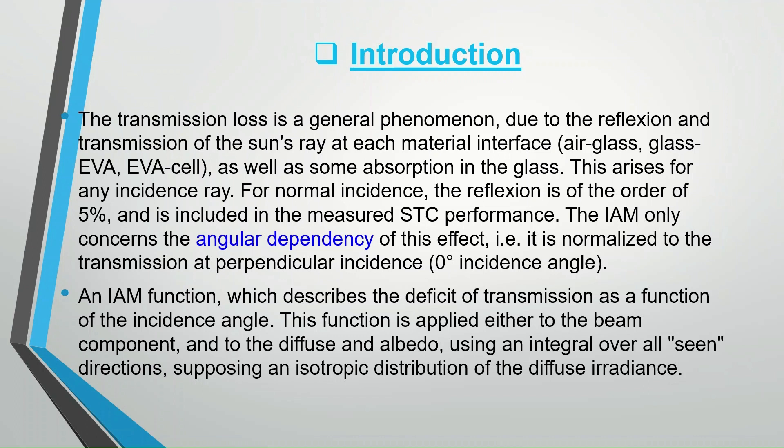For normal incidence, the reflection is of the order of 5% and is included in the measured STC performance. The IAM only concerns the angular dependency of this effect, i.e. it is normalized to the transmission at perpendicular incidence, 0 degrees incidence angle. An IAM function describes the deficit of transmission as a function of the incidence angle. This function is applied either to the beam component and to the diffuse and albedo using an integral over all scene directions, supposing an isotropic distribution of the diffuse irradiance.